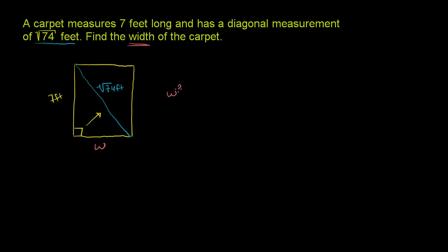So we get W squared, this side squared, plus 7 squared, this other side squared, is going to be equal to the hypotenuse squared.